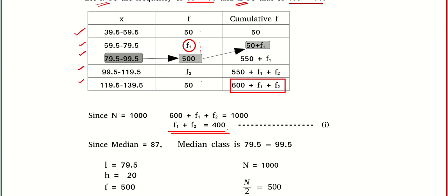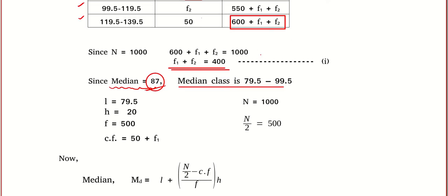In mathematics, to solve for two unknowns you need two linear equations. The second equation comes from the median. The median class is 79.5 to 99.5 — because the median is given as 87, and 87 belongs to the range 79.5 to 99.5. I got the median class, the frequency of the median class, and the cumulative frequency just above the median class, so we are ready for the calculation.